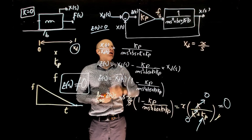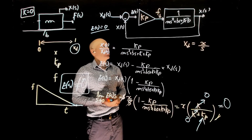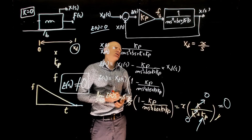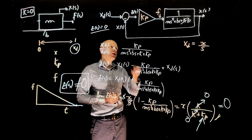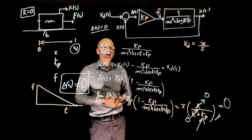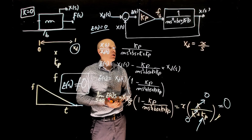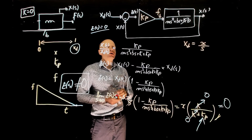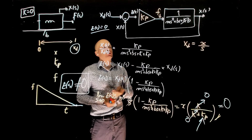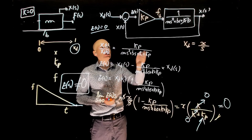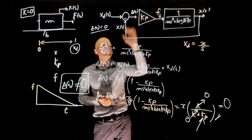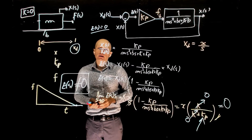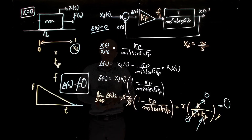So did we choose a bad controller for our mass-spring-damper system? Not necessarily — this is a decent controller and the steady state error can be made very small. We can fix this issue using a different controller: the solution would be to add an integral controller, but we'll deal with that in a separate lecture.